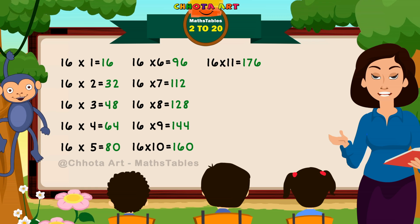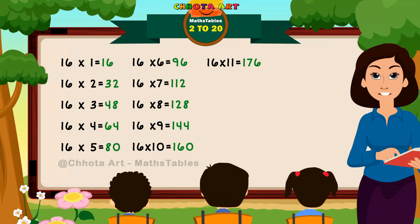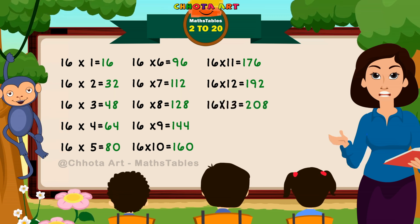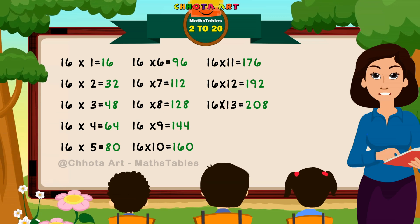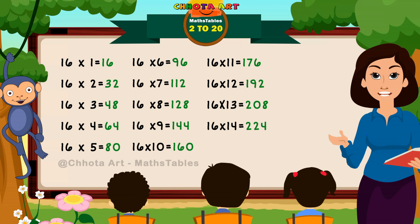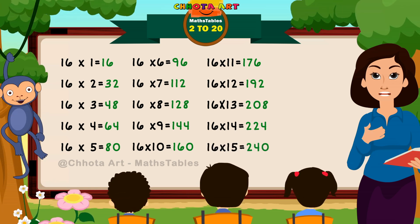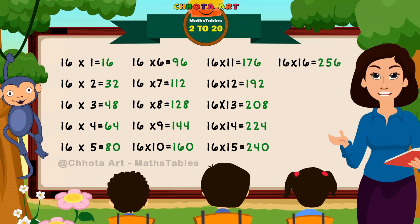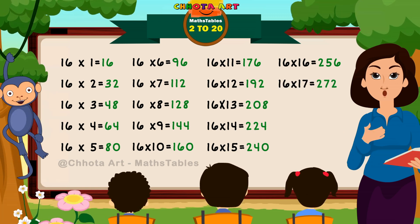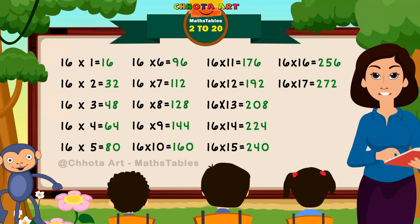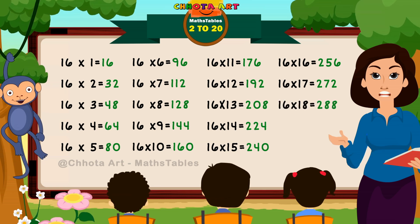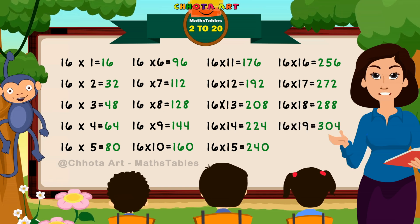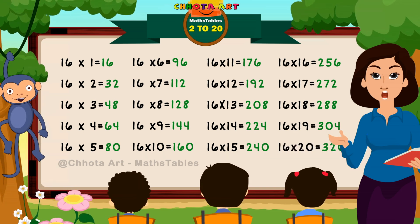16 tens are 160. 16 elevens are 176. 16 twelves are 192. 16 thirteens are 208. 16 fourteens are 224. 16 fifteens are 240. 16 seventeens are 272. 16 eighteens are 288. 16 nineteens are 304. 16 twenties are 320.